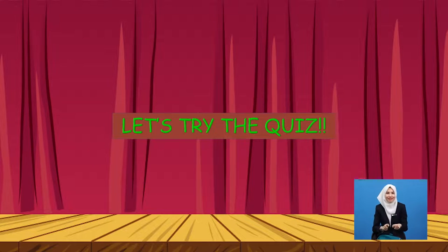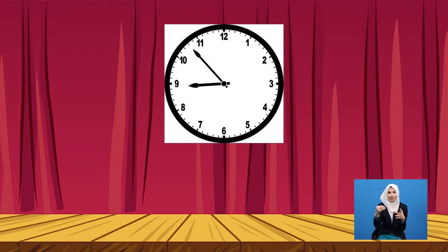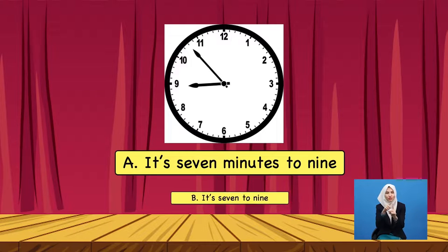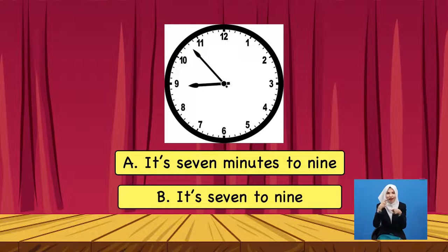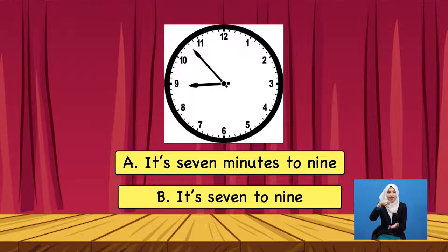Let's try out this quiz. Choose the correct answer — what time is it? The options are: A. It's 7 minutes to 9, or B. It's 7 to 9. The correct answer is A — it's 7 minutes to 9. We do not say 'it's 7 to 9'. That is incorrect.